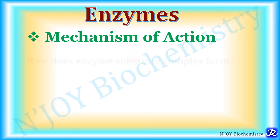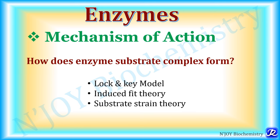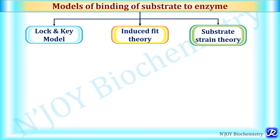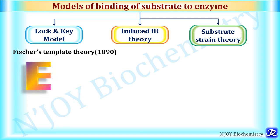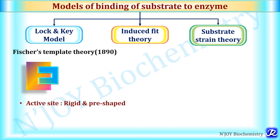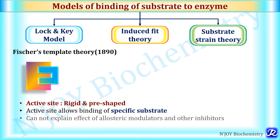The second question is how does the enzyme-substrate complex form. There are three theories: the Lock and Key model, induced fit theory, and substrate strain theory. The Lock and Key model — also called Fisher's template theory, proposed in 1890 — states that the enzyme active site is rigid and pre-shaped, complementary to the specific substrate. If the substrate is not specific for that enzyme, it cannot bind. This theory cannot explain the effects of allosteric modulators and other inhibitors.